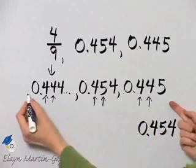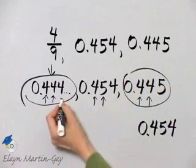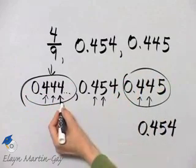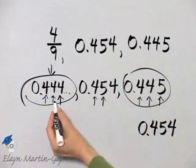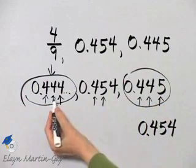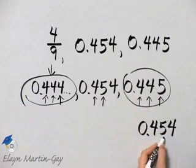Let's continue on with simply these two. And then let's go to the next place value. Here I have a 4. Here I have a 5. So this is the smallest. Then this is in the middle. And this is the largest.